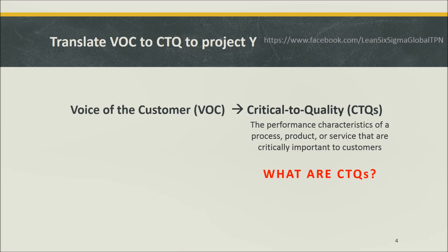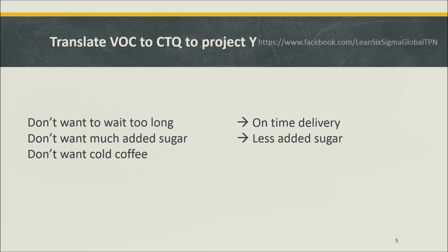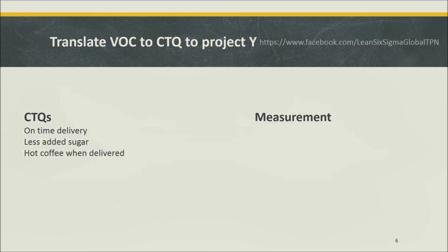Back to the coffee example: from the voice of customers, or VOC, we know that customers don't want to wait too long, don't want much added sugar, and they don't want cold coffee. We can translate 'don't want cold coffee' to 'hot coffee upon delivery.' So the critical-to-quality requirements, or CTQs, are: on-time delivery, less added sugar, and hot coffee upon delivery.